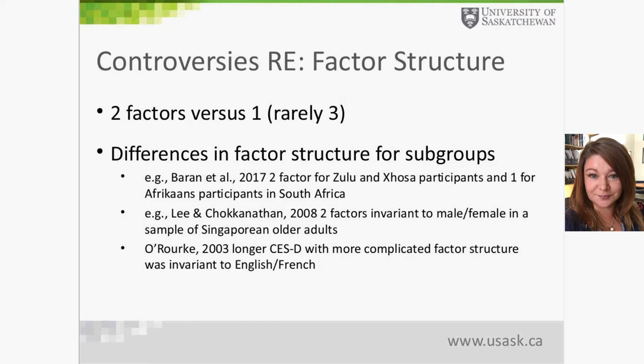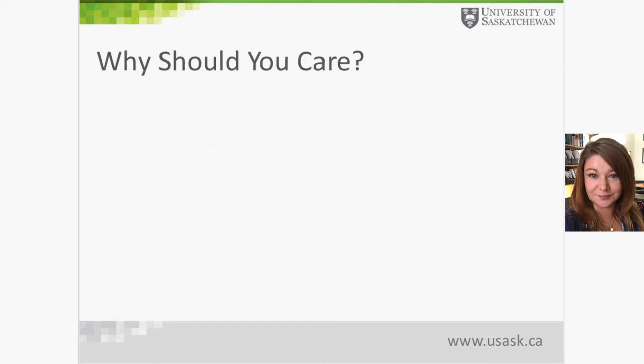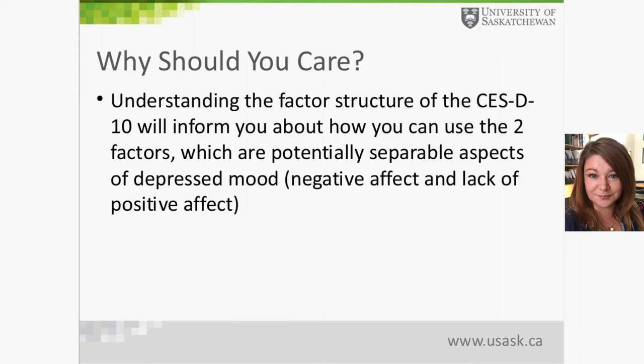The longer 20-item factor structure was found by O'Rourke in 2003 to be invariant across English and French speakers, which is relevant to the CLSA data. However, no one has yet examined factor structure consistency for subgroups based on English versus French for the 10-item scale — only for the 20-item. The key question is: why should you care? Why does this matter?